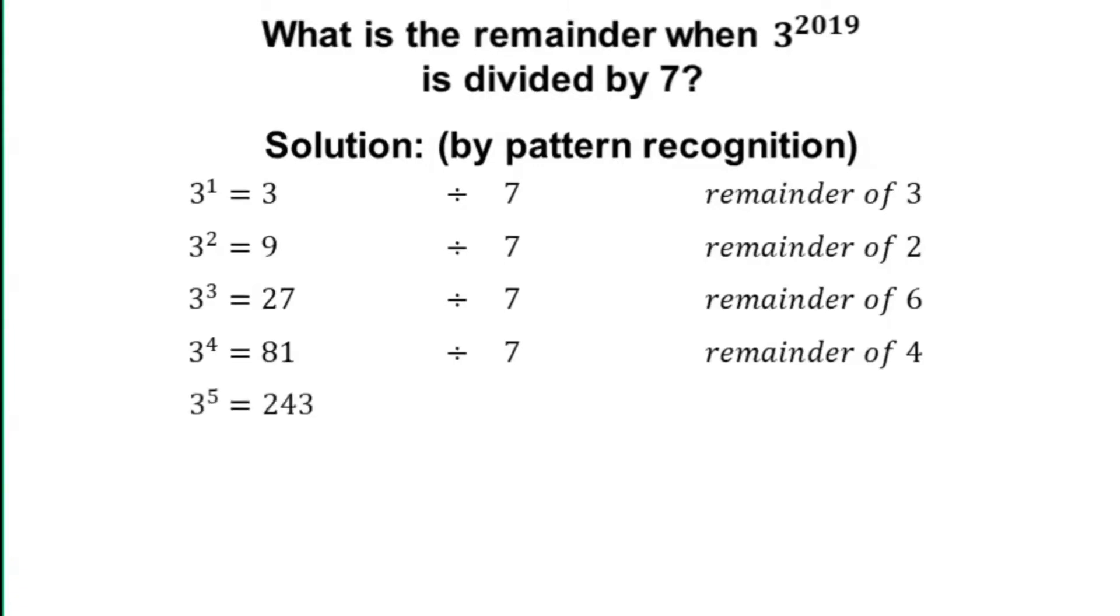3 to the power of 5 equals 243, which divided by 7 leaves a remainder of 5. 3 to the power of 6 equals 729, which divided by 7 leaves a remainder of 1.